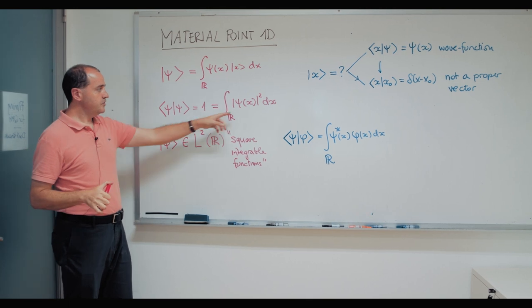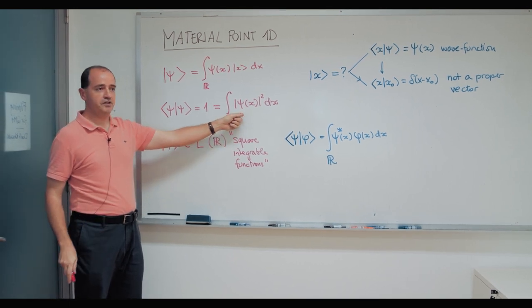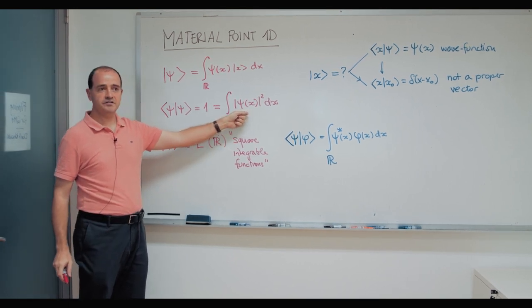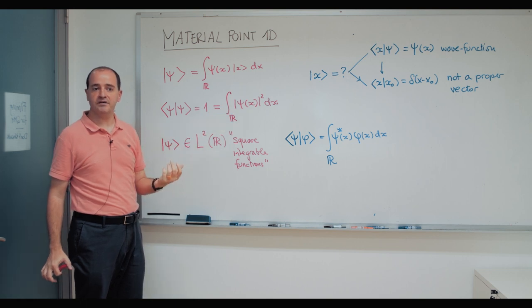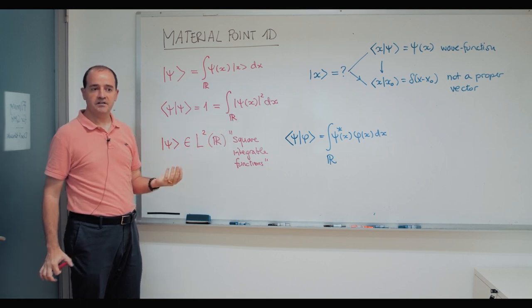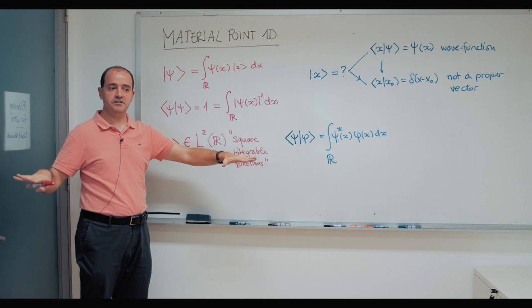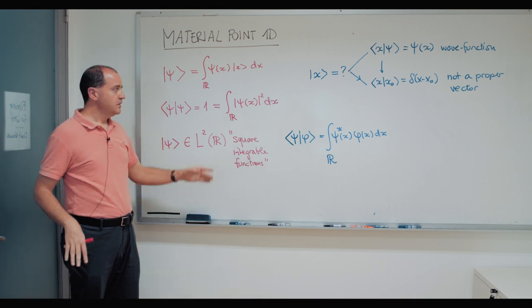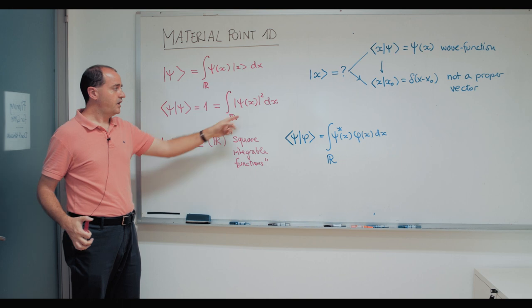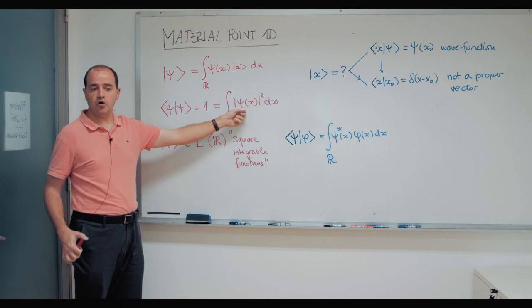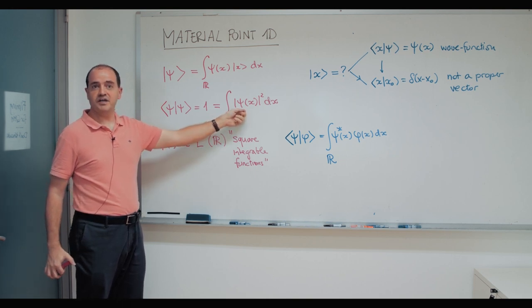Because this normalization condition must be satisfied, this function psi of x — its integral squared must be one and should not be infinity. So some functions like psi of x equal to x squared would not comply with that. The function must decrease at infinity. These functions that decrease at infinity, such that this integral is one — normalizable — are the functions that will describe proper quantum states.